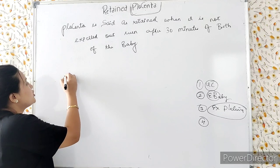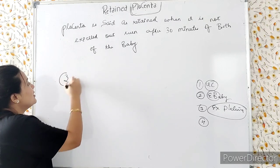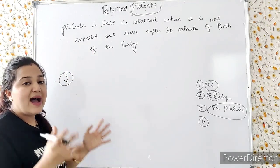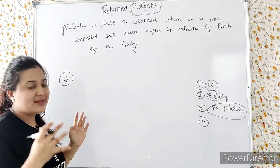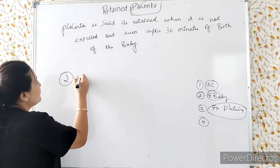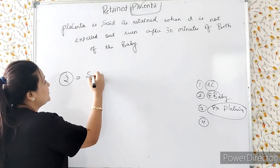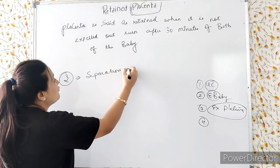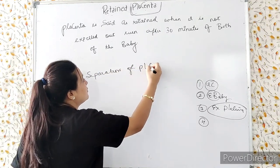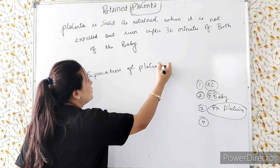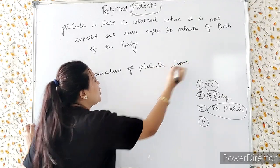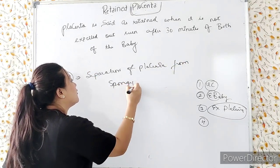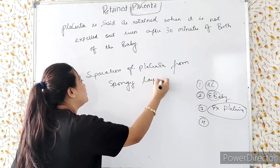There are three physiological processes involved in normal placental expulsion. The first is separation of the placenta from the spongy layer of decidua.